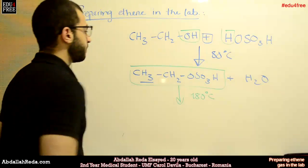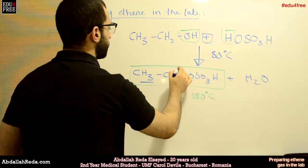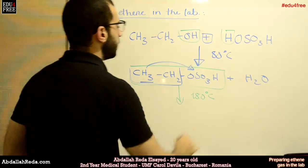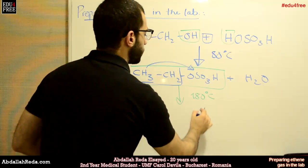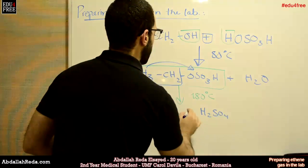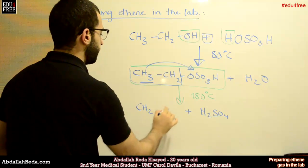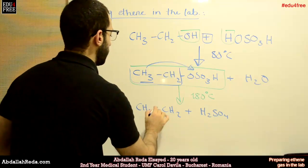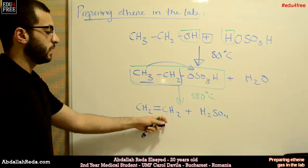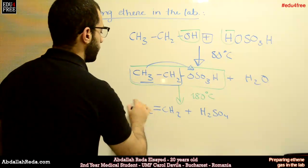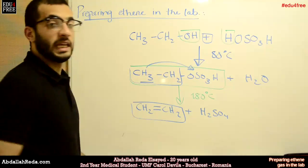An H from here, from the ethyl part, will go back to this molecule and form H2SO4. We'll have here a CH2 and a CH2 with a vacant bond. The bond will form again between the two carbons to create a double bond, and we will get ethene: CH2=CH2.